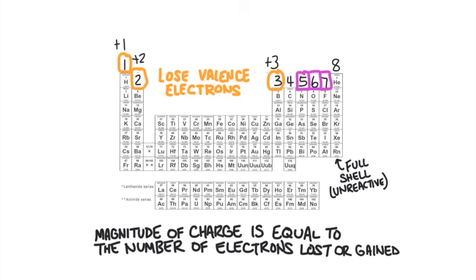Groups five, six, and seven will gain valence electrons so that they have eight — these are the non-metals. In general, non-metals will gain valence electrons. Since they are gaining electrons, and electrons are negatively charged, they will have an overall negative charge. The magnitude of the charge is equal to the number of electrons the atom gained. Everything in group five will gain three valence electrons, so they will have a 3− charge. Group six will gain two electrons and have a 2− charge. Group seven will gain one electron and have a −1 charge.